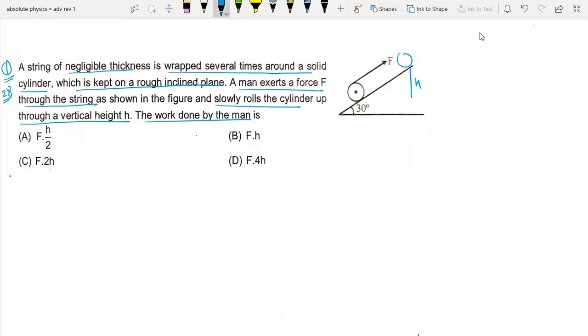How much work is done? First we see this process: the vertical lift of the center of mass on the inclined plane. We can write x sin 30 equals h, so x equals 2h.